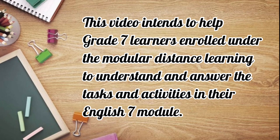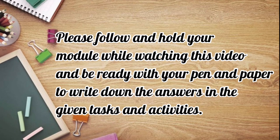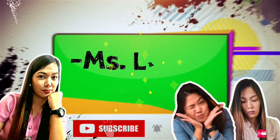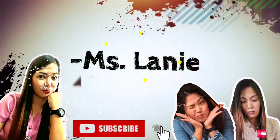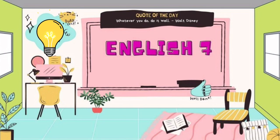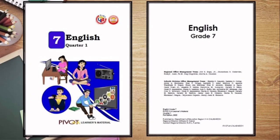This video intends to help Grade 7 learners enrolled under the Modular Distance Learning to understand and answer the tasks and activities in their English 7 module. Please follow and hold your module while watching this video and be ready with your pen and paper to write down the answers. I will be using the English 7 Pivot for a Learner's Material published by DepEd Calabarzon.